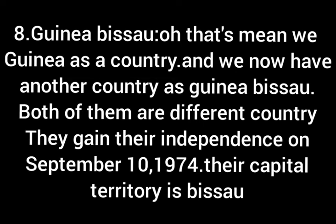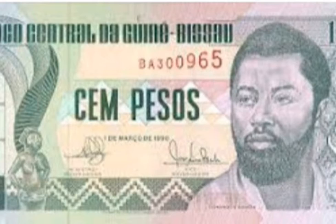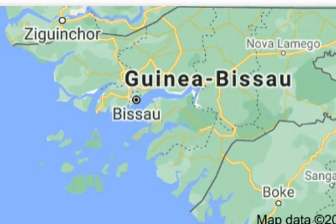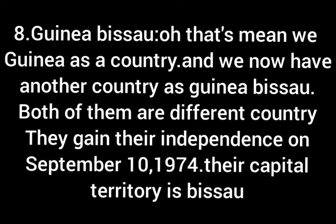Both Guinea and Guinea-Bissau are different countries in West Africa. Number 8, Guinea-Bissau. This is the Guinea-Bissau president, Umaro Sissoco Embaló. This is their currency, flag, and map. They gained independence on September 10, 1974. Their capital territory is Bissau.